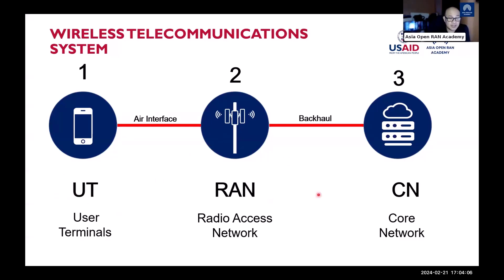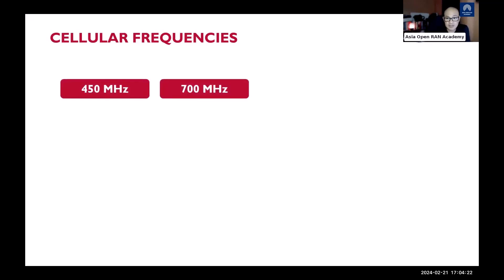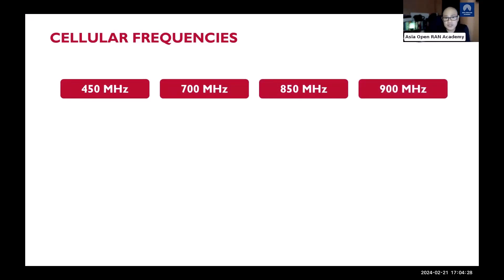The air interface uses various frequencies. In the lower and mid bands of the cellular system, we use 450 MHz, 700 MHz, 850 MHz, and 900 MHz. To understand frequency, think of tuning into an FM station — for example, a famous FM station is at 90.7 MHz.